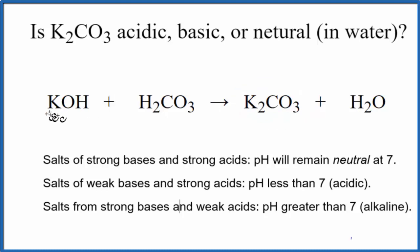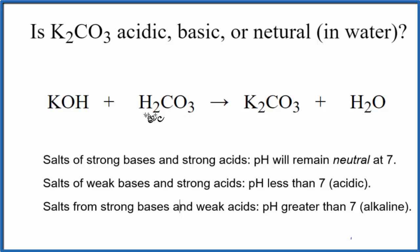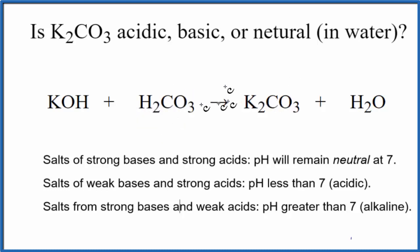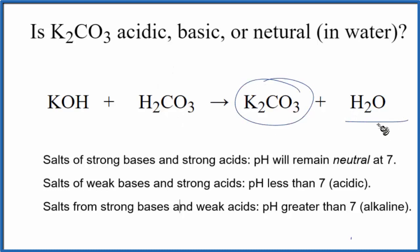So we have KOH — that OH tells us this is our base — and then H2CO3. The H in front tells us that this is our acid, carbonic acid, and that'll react to form our potassium carbonate in water. Neutralization reaction.